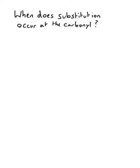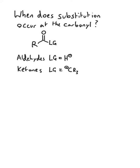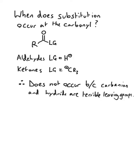This video will discuss when substitution occurs at the carbonyl. Right off the bat, aldehydes have a hydrogen leaving group and ketones have a carbon-based leaving group, so if the leaving group were to leave you would end up with a hydride or a carbanion. As both of those are terrible leaving groups, substitution does not occur with them.